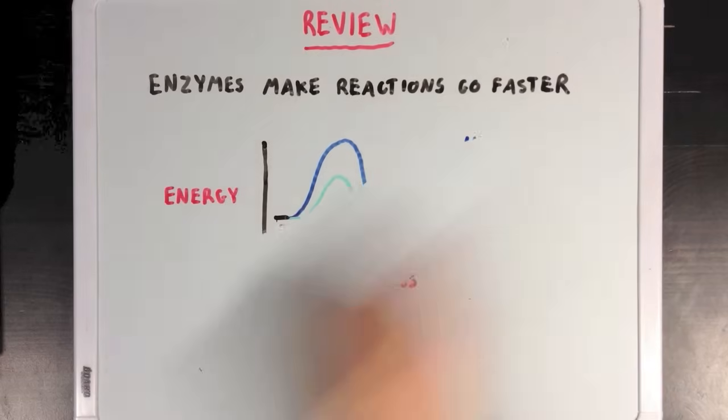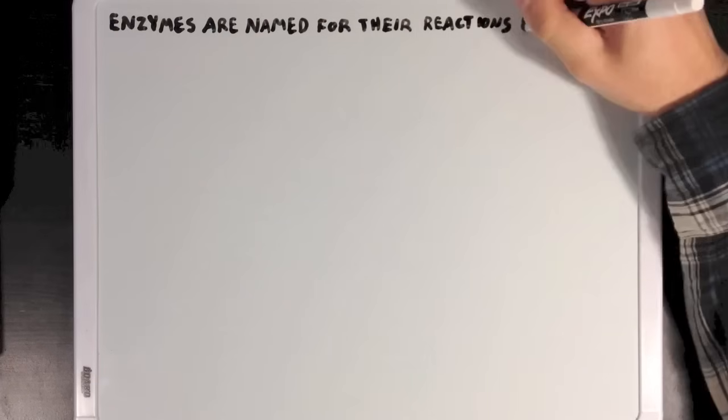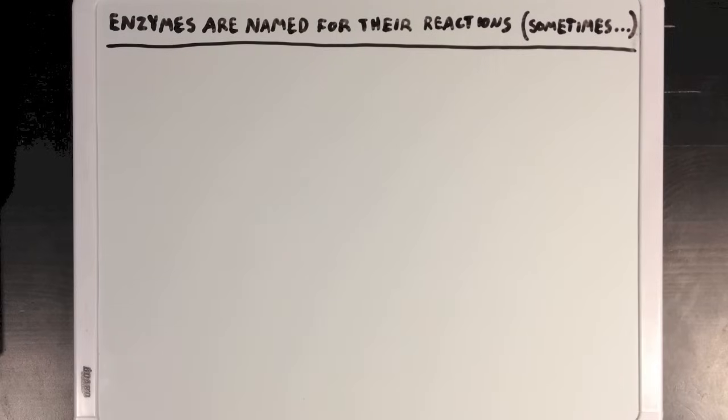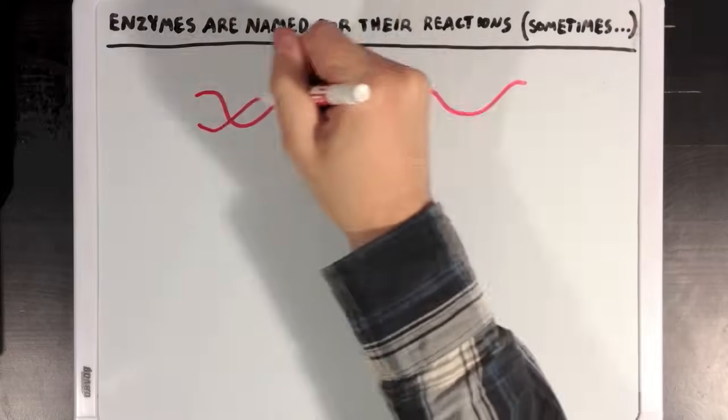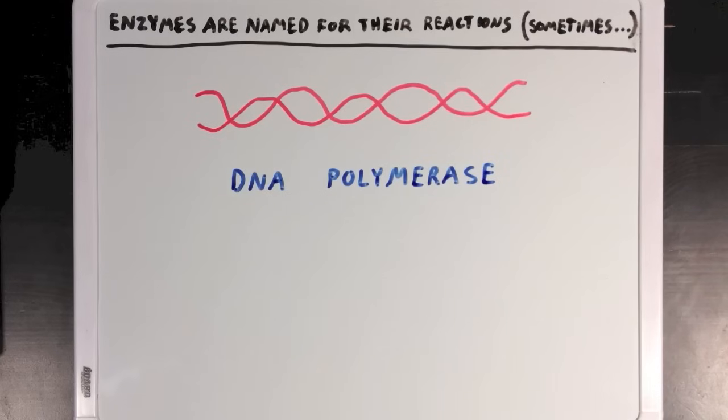Now, enzymes are generally named for their reactions, which is convenient because it makes it a lot easier to remember what an enzyme does if someone gives you its name. And a great example of this is that one of the enzymes involved in DNA replication is called DNA polymerase, which is named as such because it acts on DNA and specifically makes polymers of DNA. Now, the suffix ace is usually just one that you find at the end of most enzyme names.